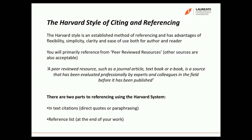We'll move on to the first part now: in-text citations and using a direct quote. When you use a direct quote there are four things you need to remember to do so that you have done the in-text citation correctly. The first thing is to put quotation marks around the direct quotation — always at the beginning and the end. Then you need to put in the author's name, the year of publication, and the page number, as you can see in the examples shown here.